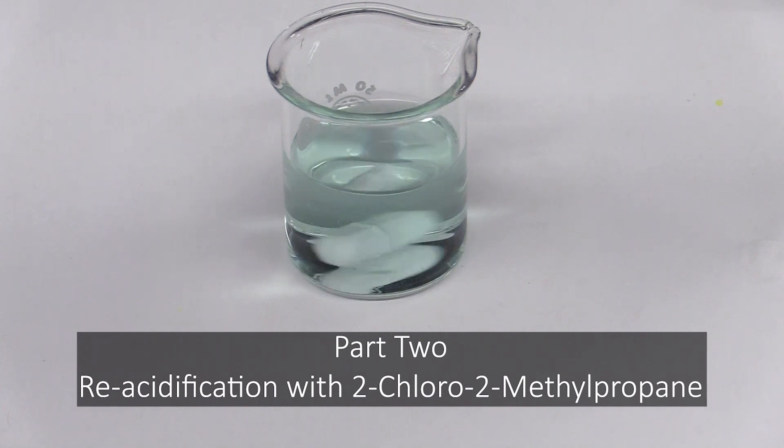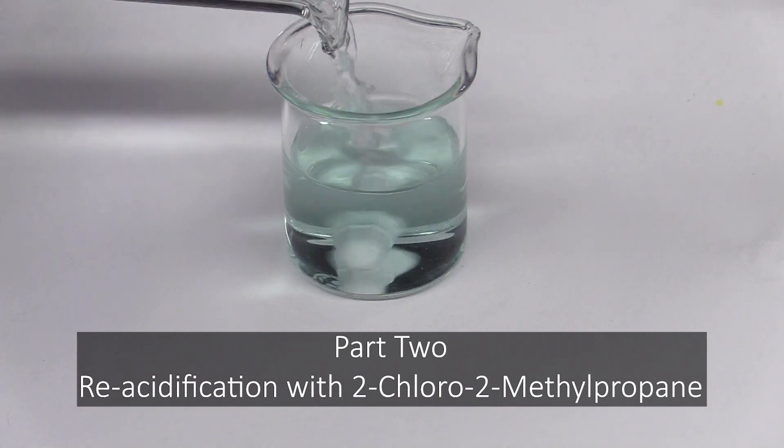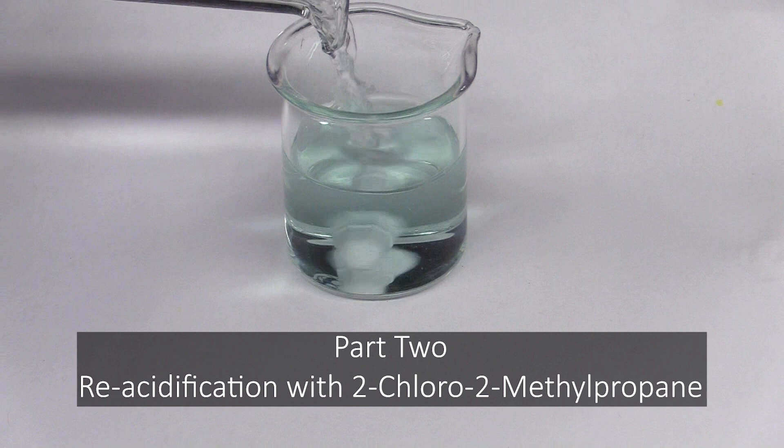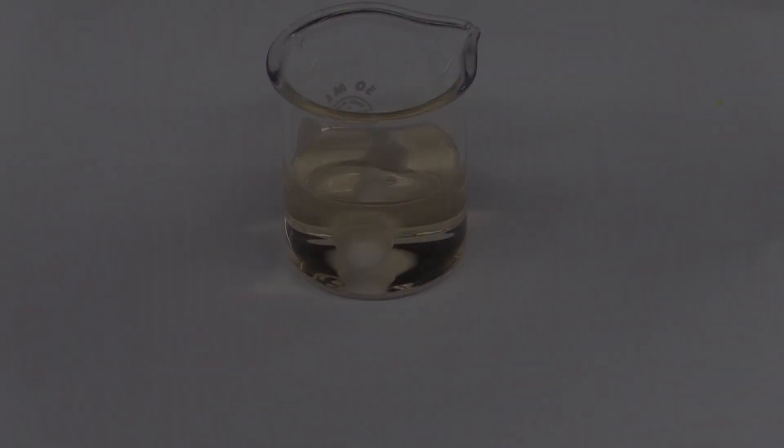All you have to do to start this reaction is add some prepared 2-chloro-2-methylpropane. You can track this reaction the same way you brought the acid solution to pH 9, that is, by monitoring the solution's color.